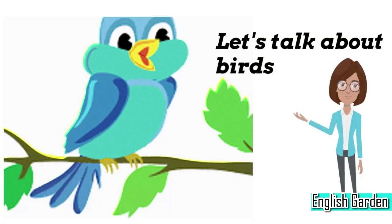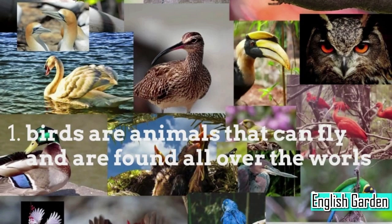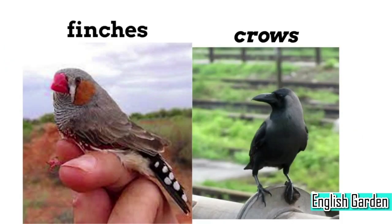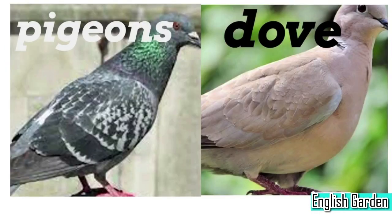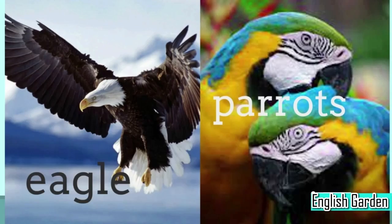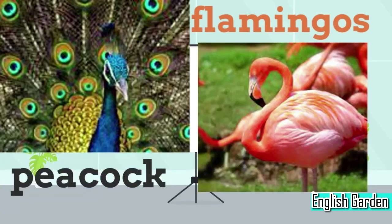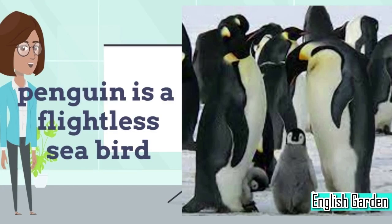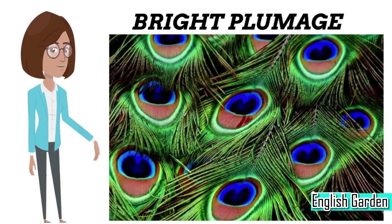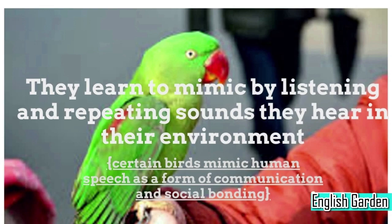Next, let's talk about birds. Birds are animals that can fly, and are found all over the world. Some common birds include sparrows, robins, finches, crows, pigeons, and doves. Other birds like eagles, parrots, peacocks, flamingos, and penguins are found in different parts of the world and have unique characteristics such as bright plumage or the ability to mimic human speech.